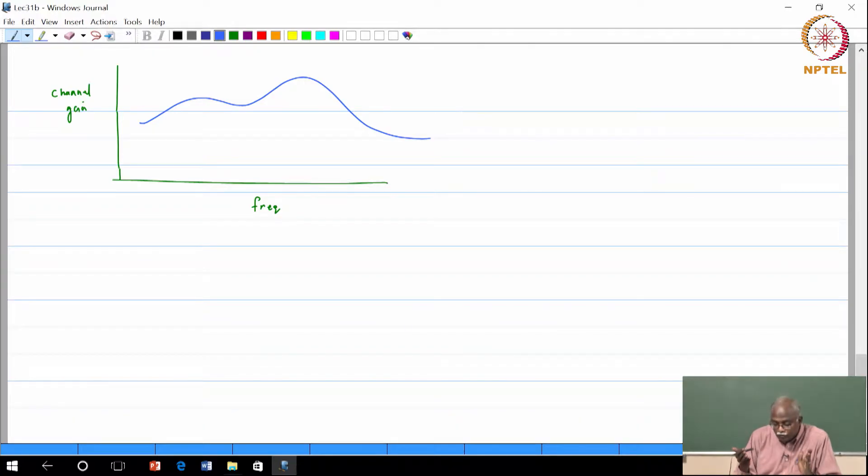Now if I had a scenario where my signal was this wide, that is when I see the frequency selective fading - all the frequencies in my signal are not getting the same channel gain. Now I have a problem.